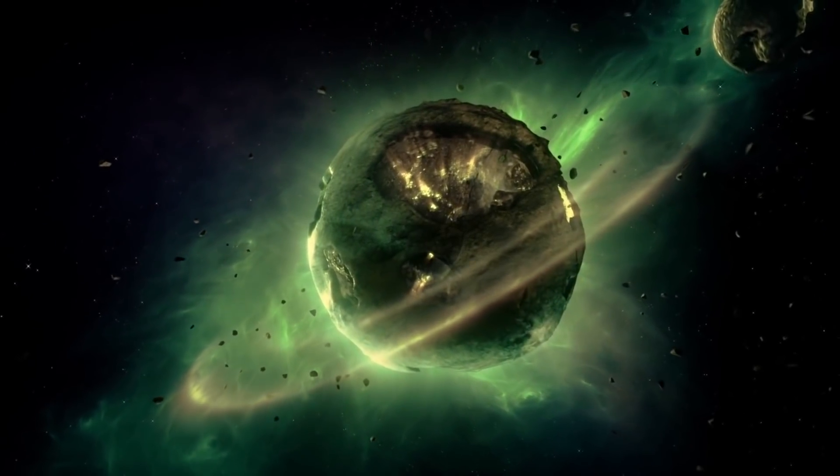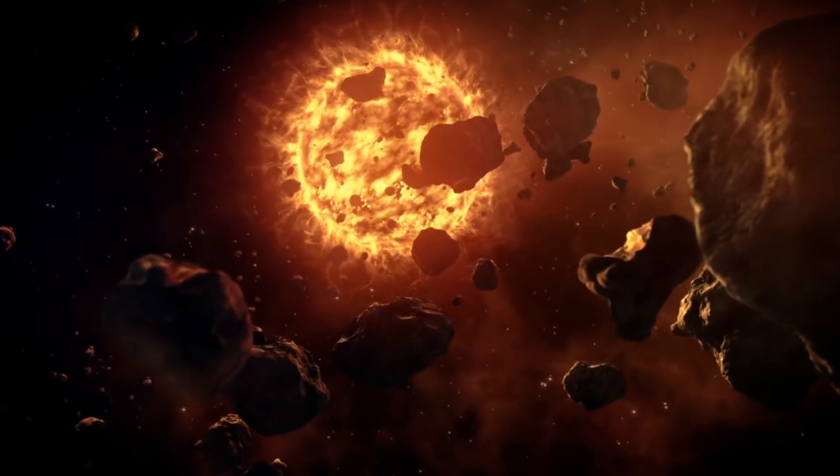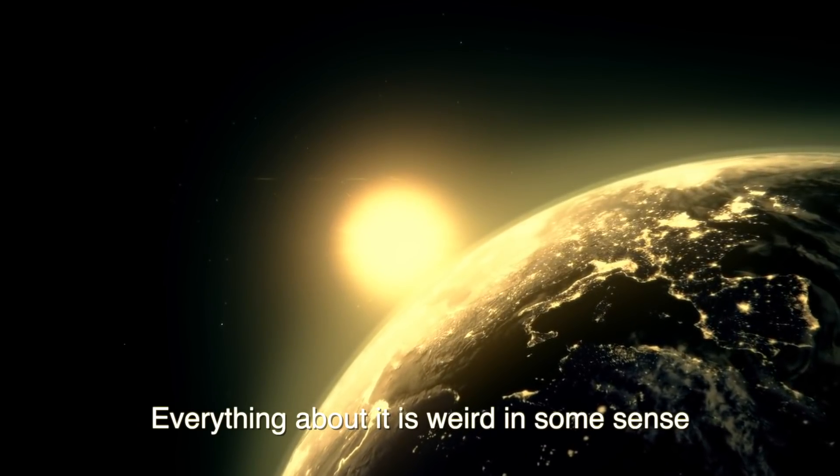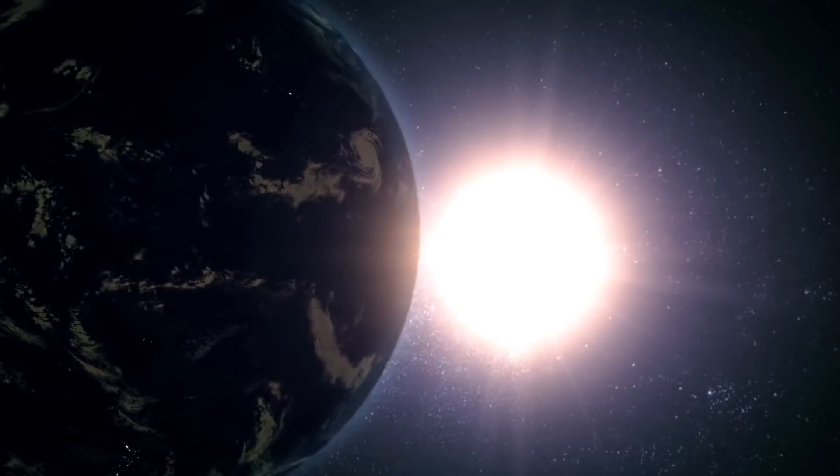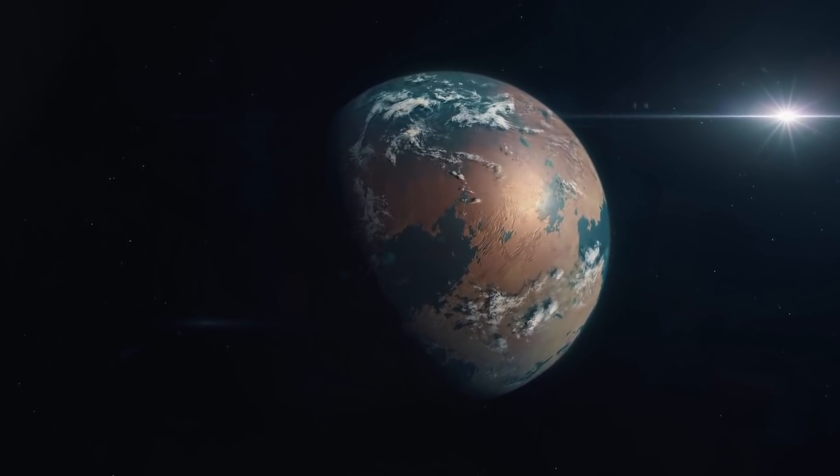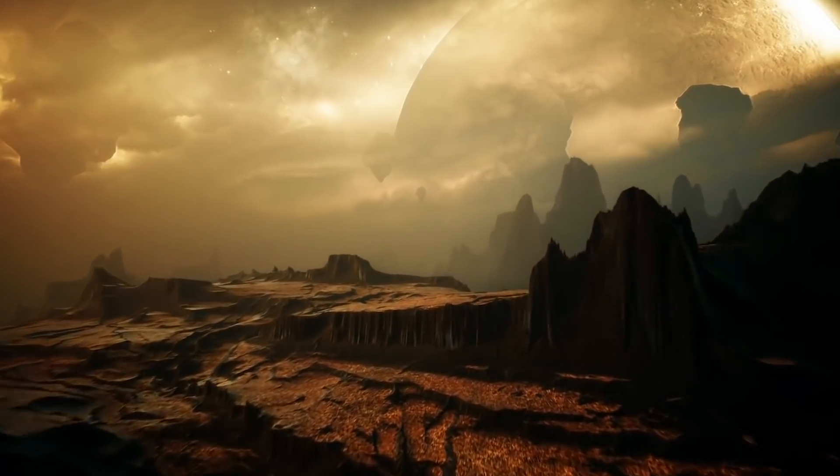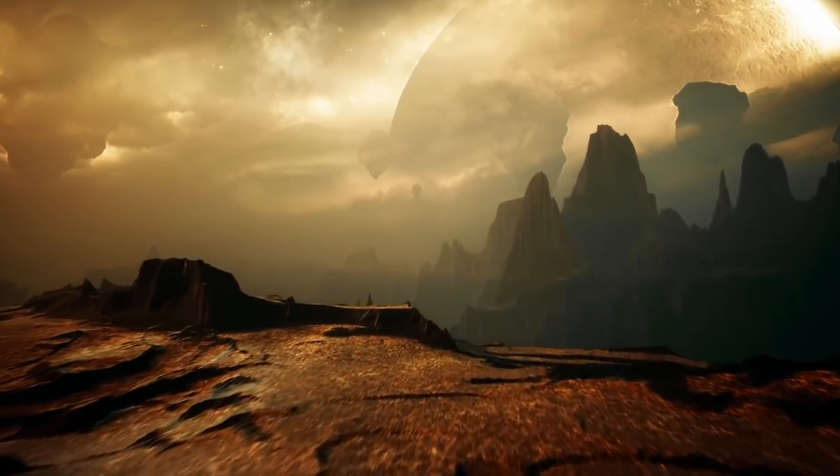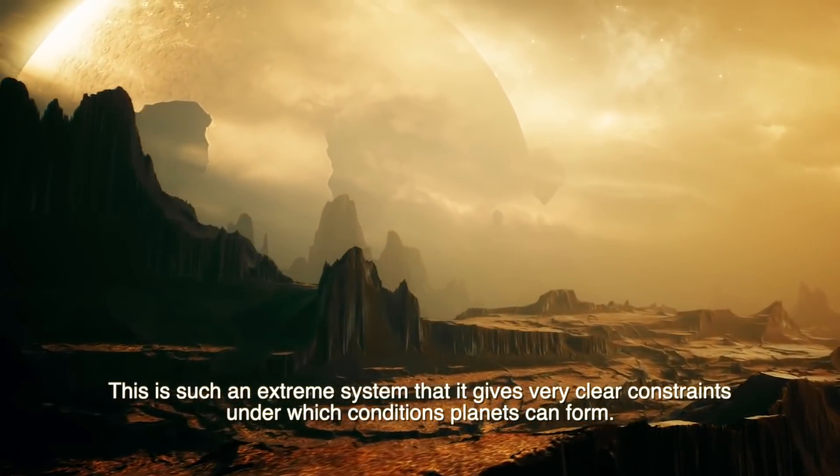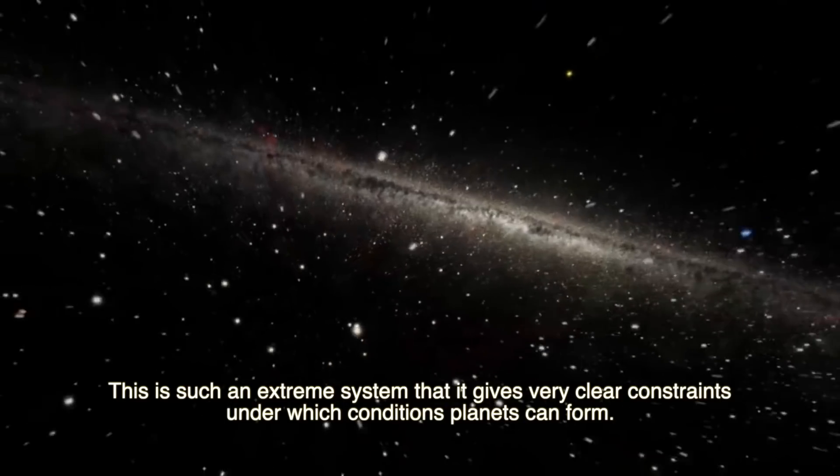There is only a handful of solar system objects that orbit so far from the Sun that we are aware of. Johnson said, everything about it is weird in some sense. Now the discovery of the planet is questioning scientists' ideas about how planets form and evolve. Planets are made out of gas and dust particles left behind from the creation of stars. These particles clash and break up into larger and larger fragments, eventually forming a young planet. Johnson says, this is such an extreme system that it gives very clear constraints under which conditions planets can form.